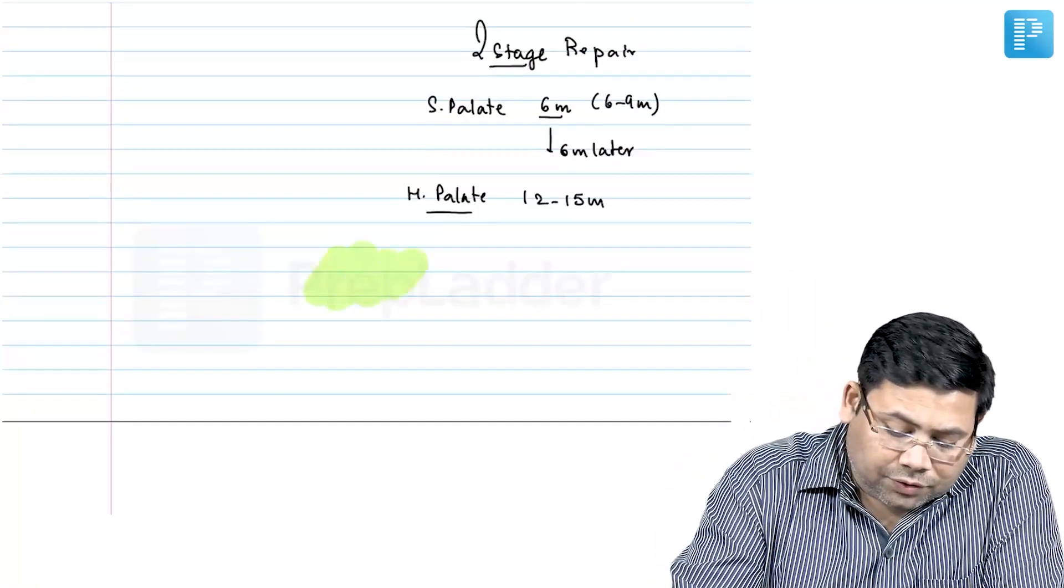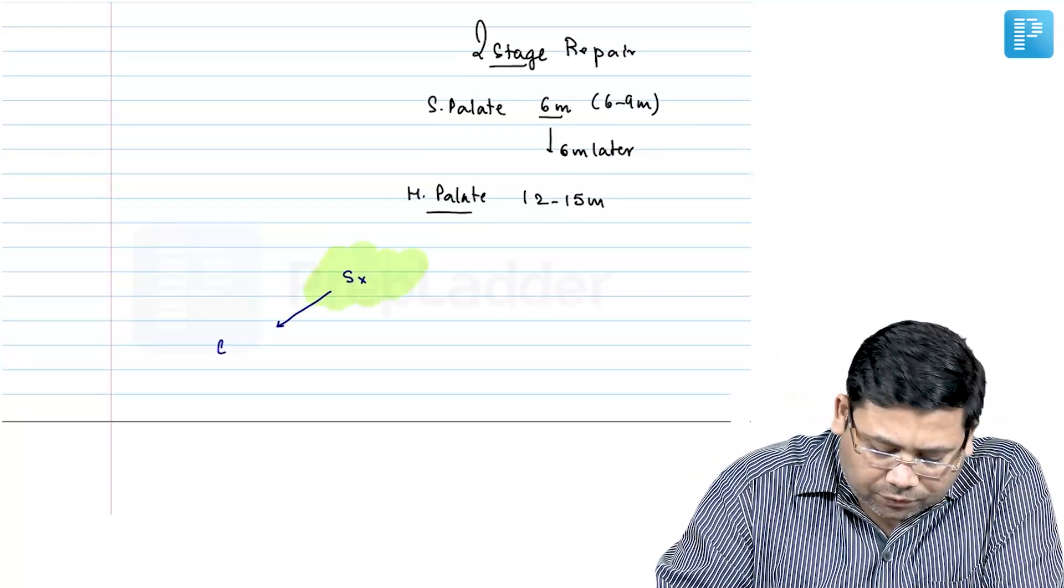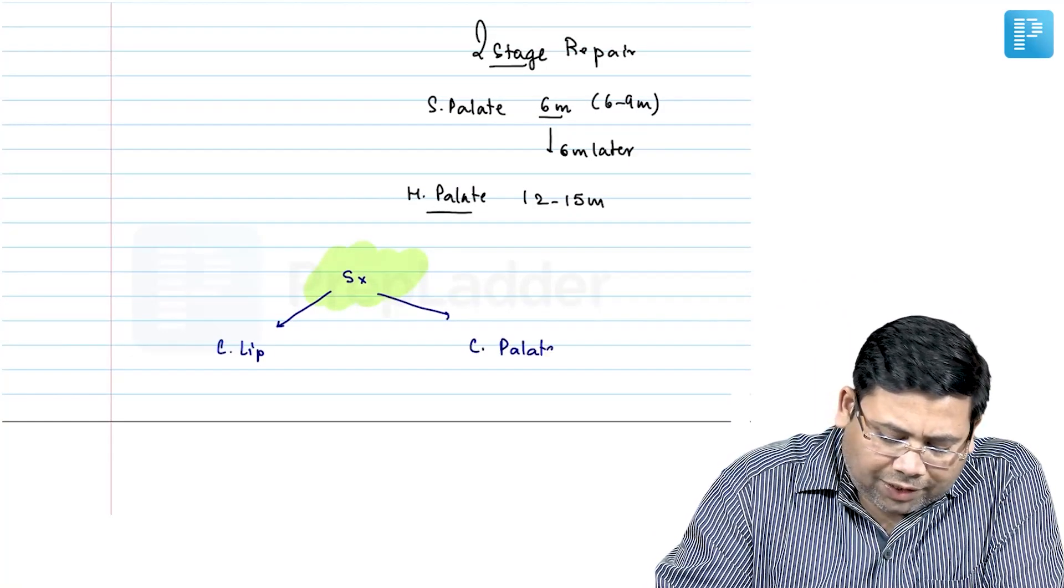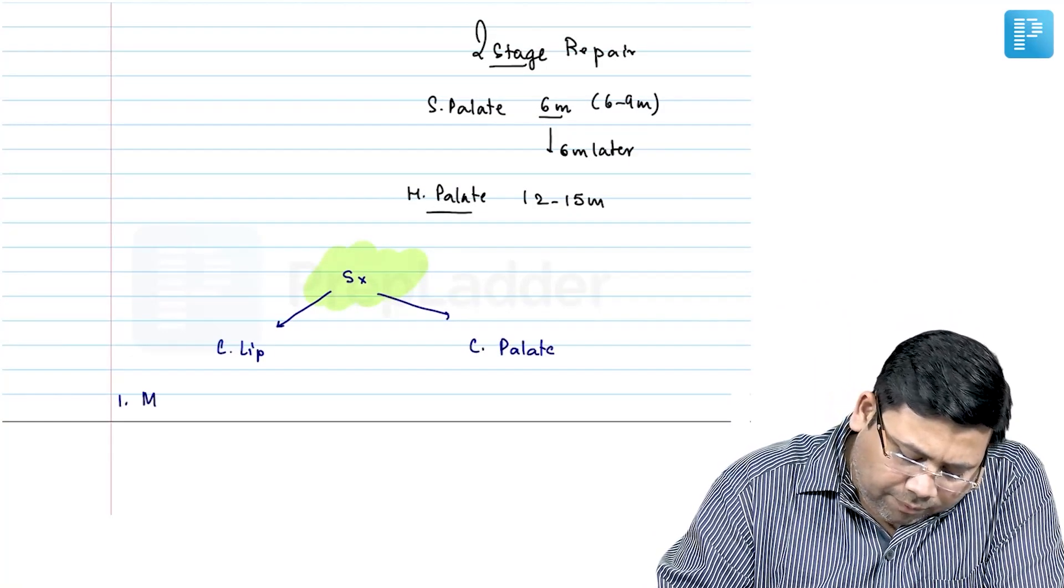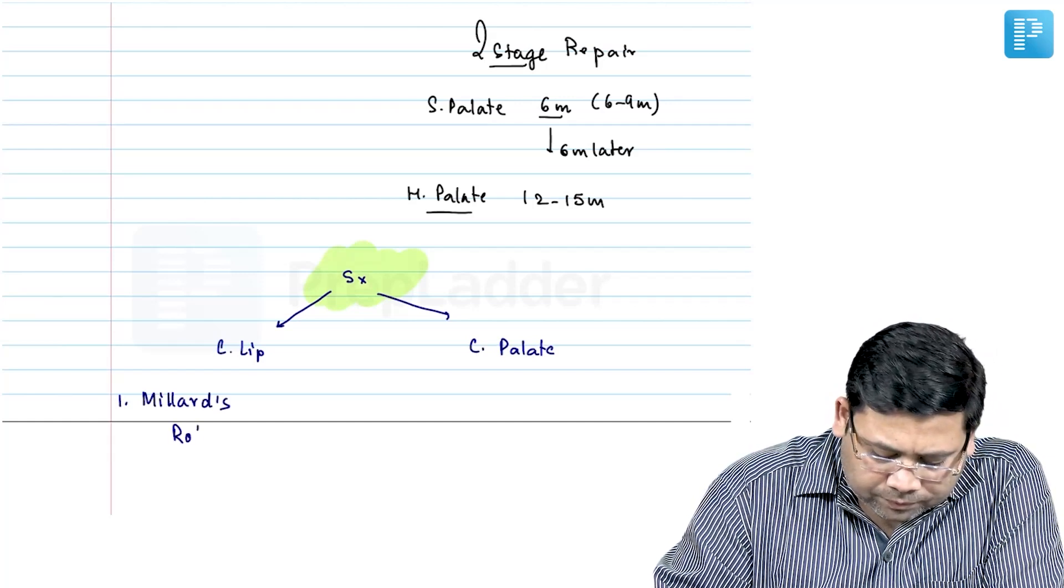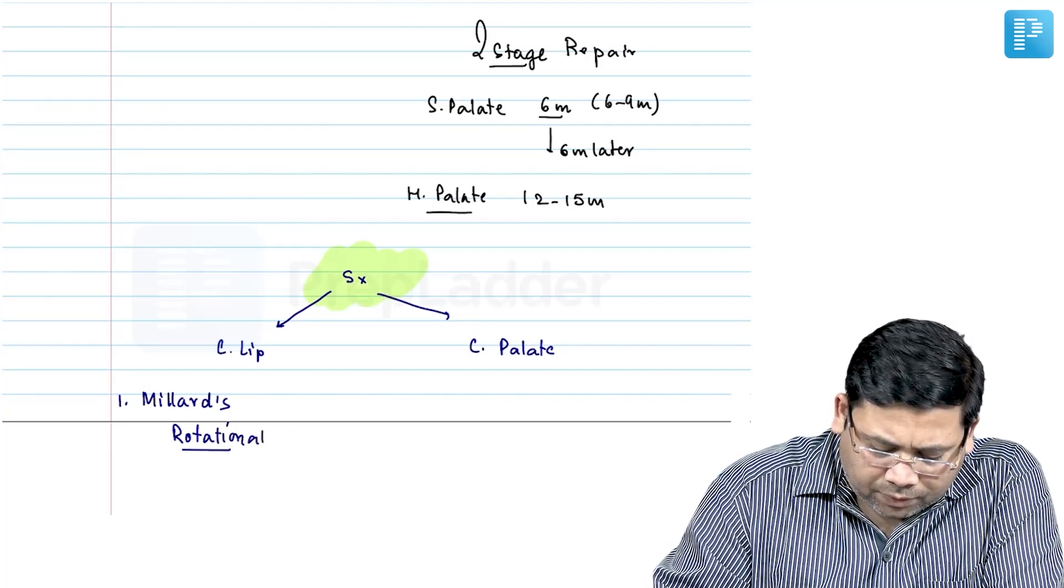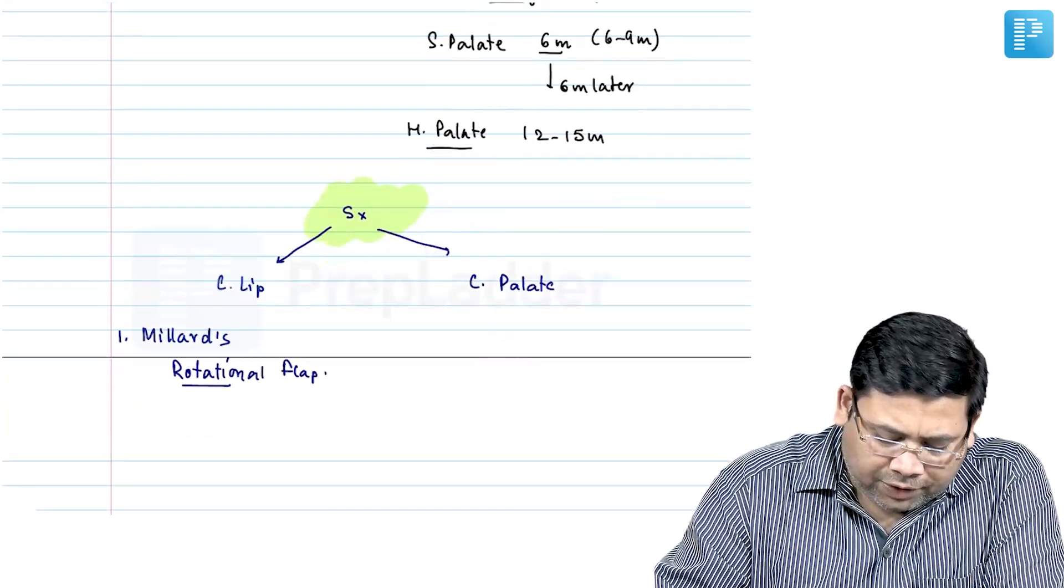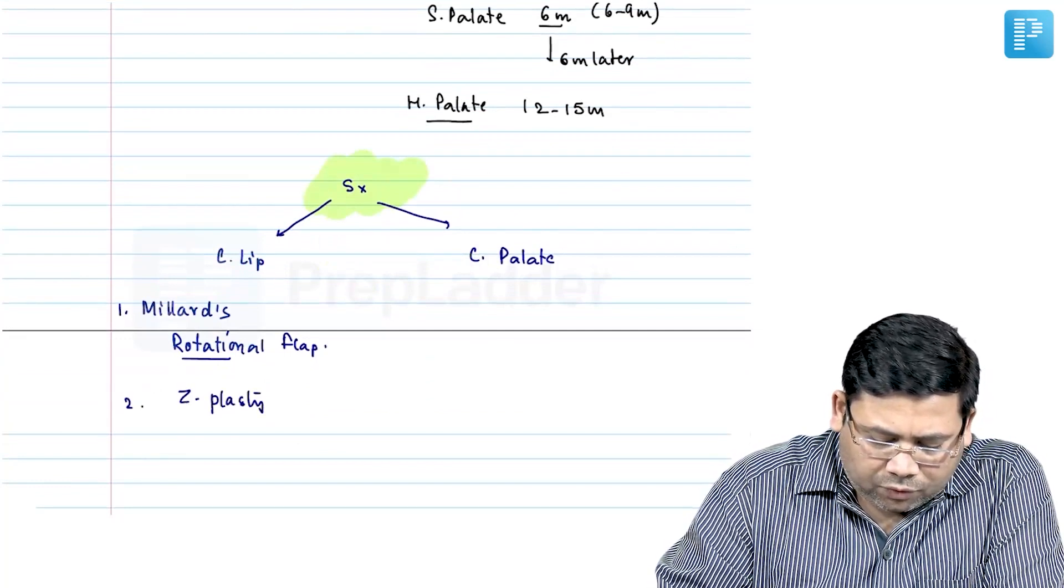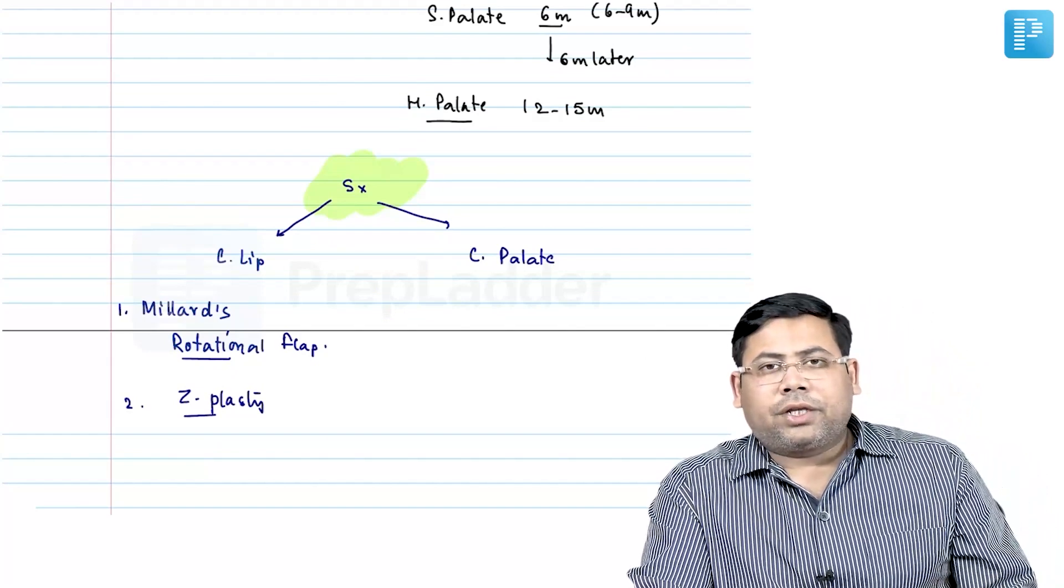Then what are the surgeries that we do? When we talk about surgeries, we have surgeries for cleft lip and we have surgeries for cleft of palate. When we talk about cleft of lip, we have Millard's rotational flap. Along with that, we have Z-plasty. Either you go for Z-plasty or you can go for a Millard's rotational flap.